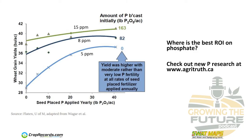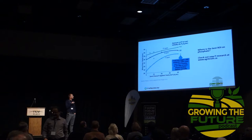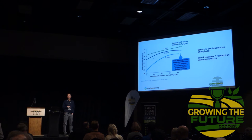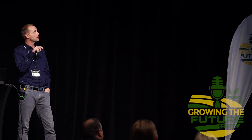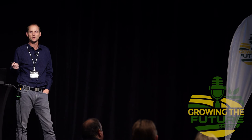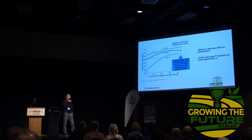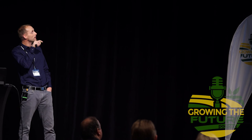Fertilizer responsiveness: there was a really cool trial back in the 1980s right outside Saskatoon. They took a plot of land, divided it into small plot design, took a 5 ppm Olsen phosphorus soil — very low yet typical in a lot of Saskatchewan — put a whole lot of phosphate on and brought one plot up to 8 ppm and another up to 15 ppm. Then they grew wheat for five years with different rates of applied phosphorus. The result: they took a really responsive soil and built it up to a point where it's not as responsive. Then you can just maintain phosphate. This proves phosphate responsiveness.